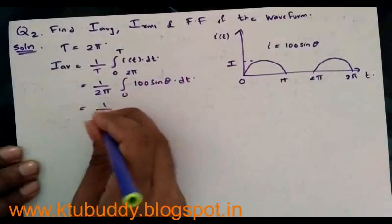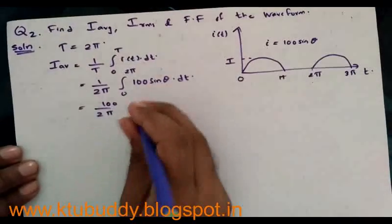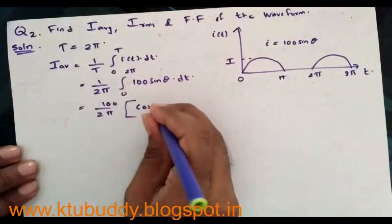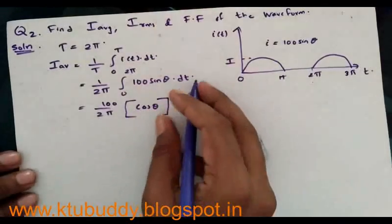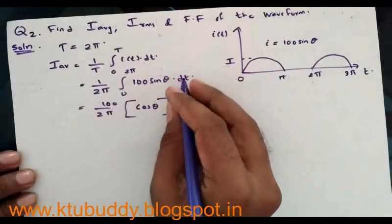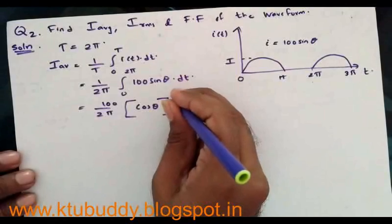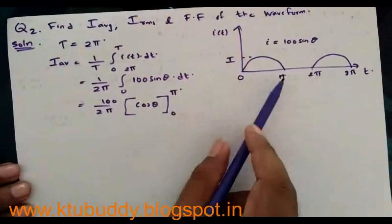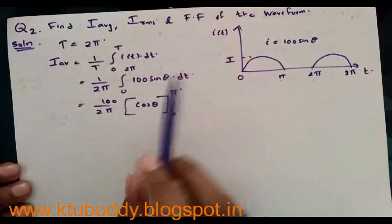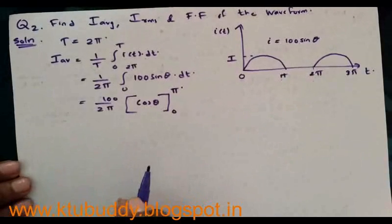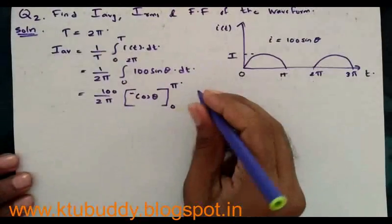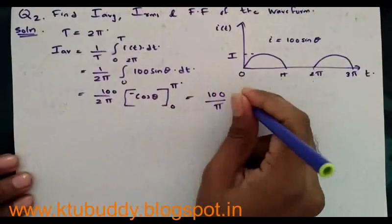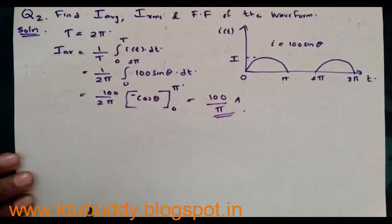This gives us (100/2π) × integral of sin(θ). We change the limits from 0 to 2π down to 0 to π, because from 0 to π the value of i is 100 sin(θ), and from π to 2π the value is 0. The integral of sin(θ) is −cos(θ). Using trigonometric identities where cos(nπ) = −1 and cos(0) = 1, we solve and get the value of i_average = 100/π.